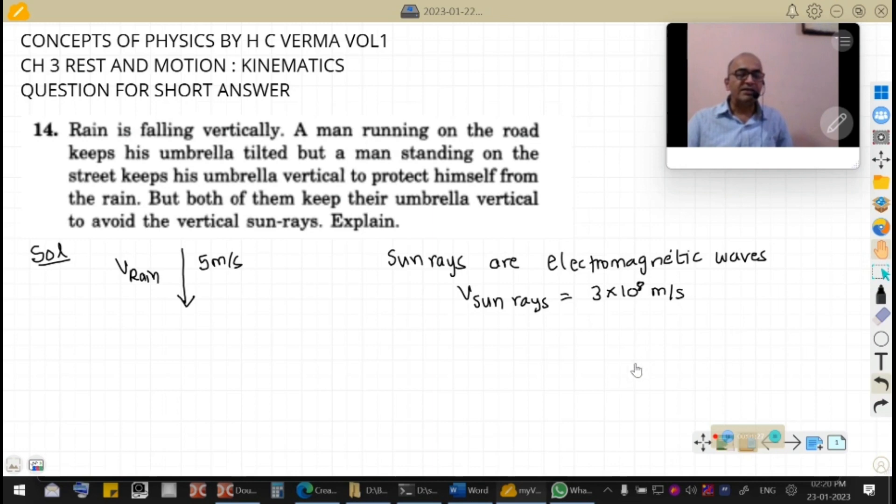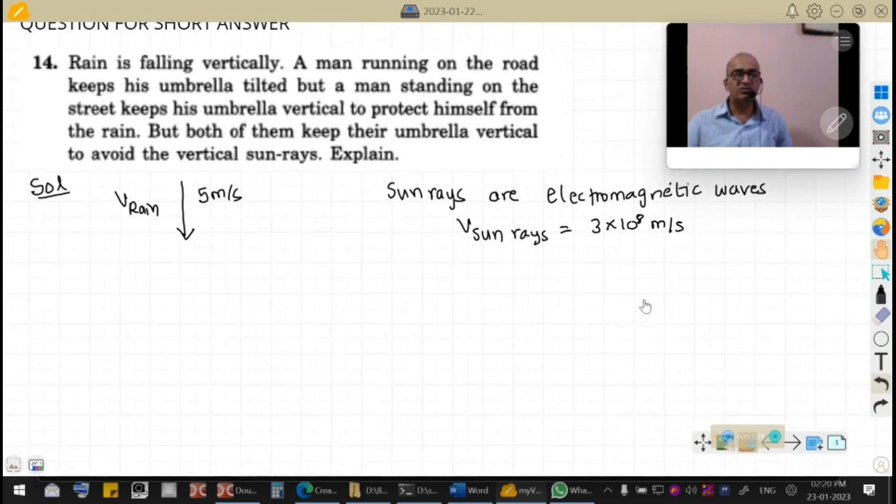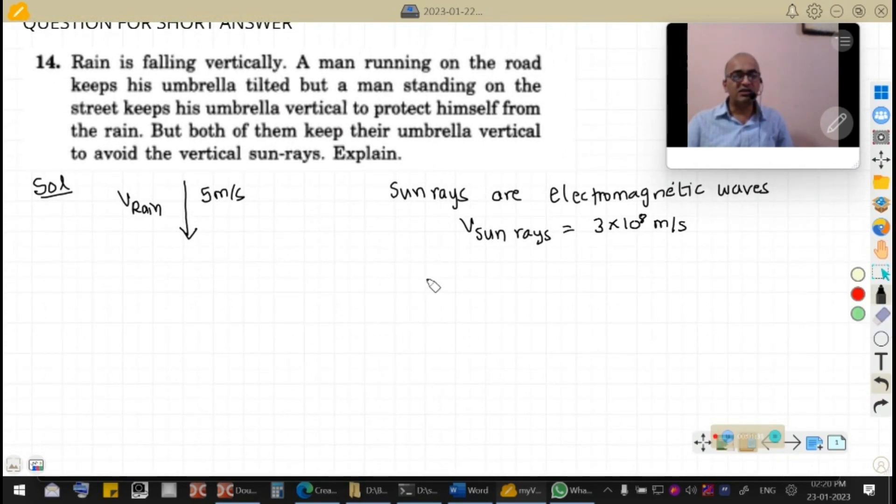So suppose we want to analyze the situation with the sun rays. Let us say it is mid noon and sun rays are coming vertically like this from the sun.